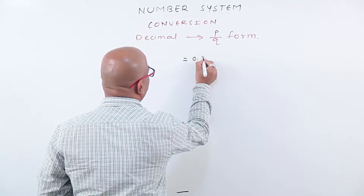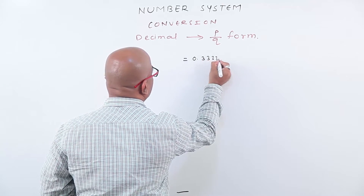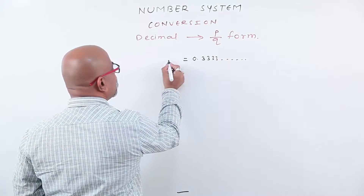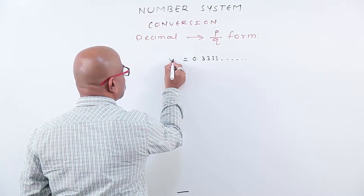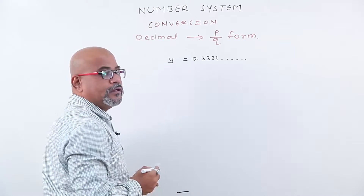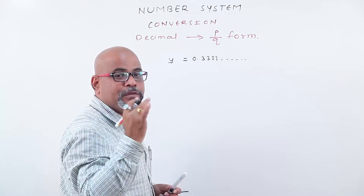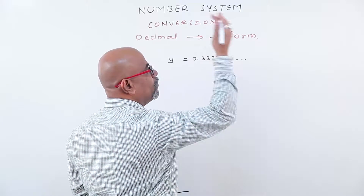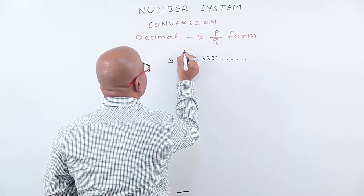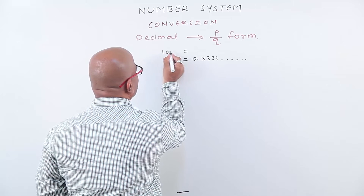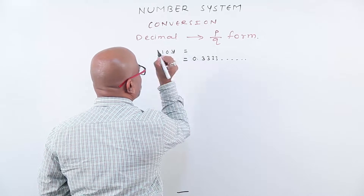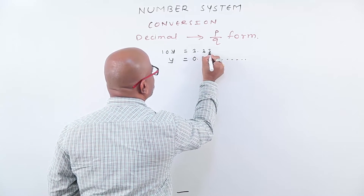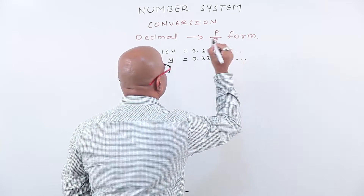A common example: decimal point three three three three and so on. We consider this as y. Here we observe that only one number is recurring — one number is repeating. Therefore, we multiply this y by 10. We get 10y equals to three point three three three three and so on.